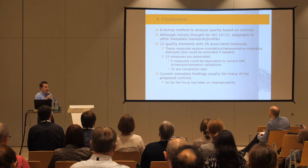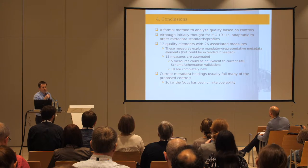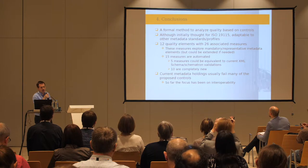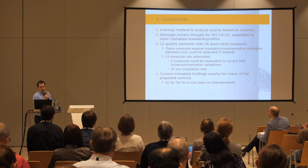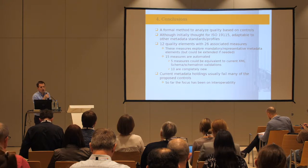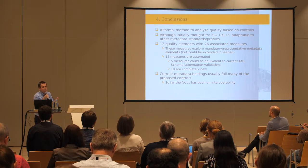As conclusions, we have proposed a formal method to analyze quality based on controls. Although we initially designed it for ISO 19115, it is adaptable to other metadata standards and profiles. We have proposed 12 quality elements with 26 associated measures. Fifteen measures can be automated; 5 are equivalent to what validators currently do, but 10 are completely new.